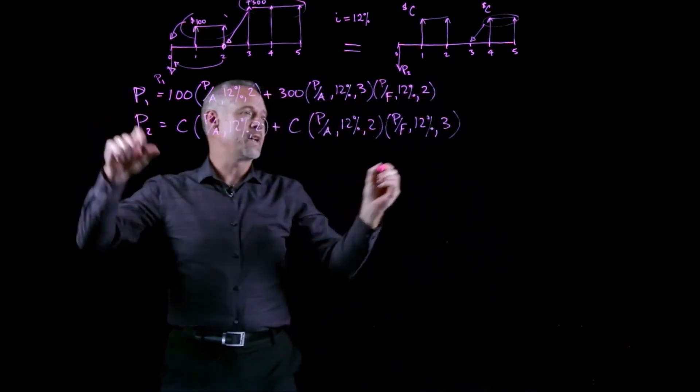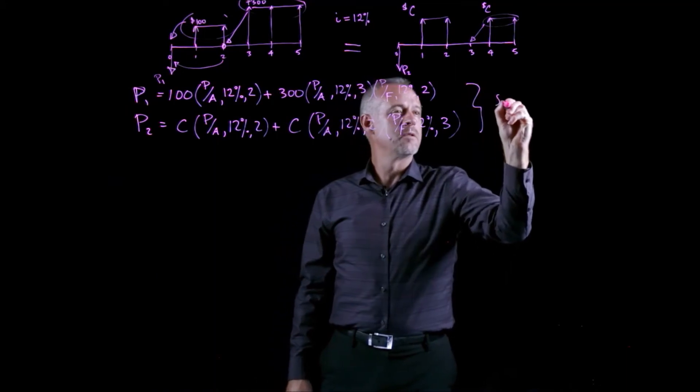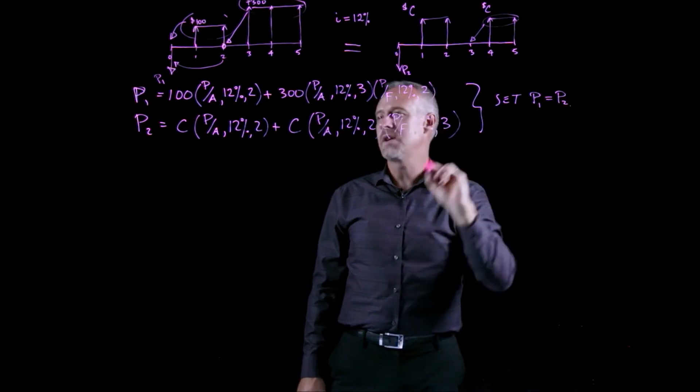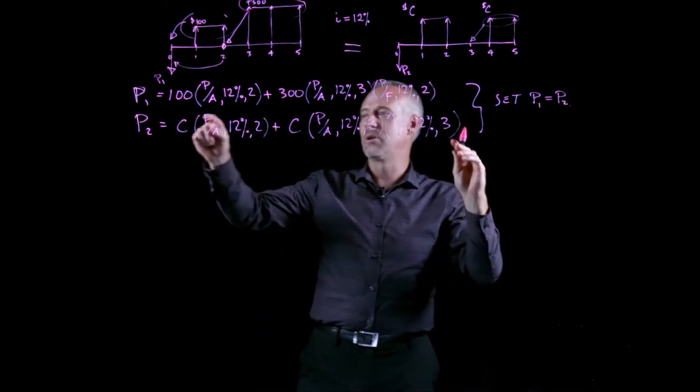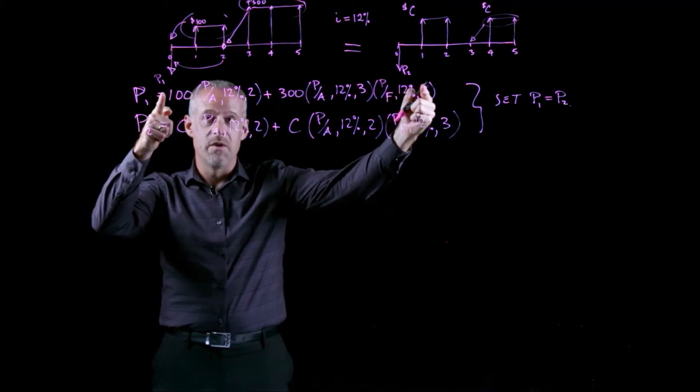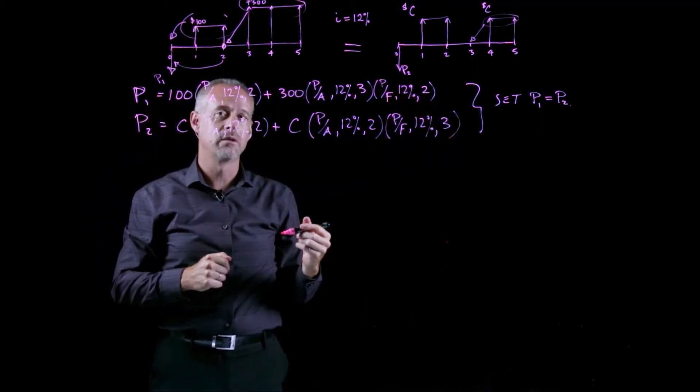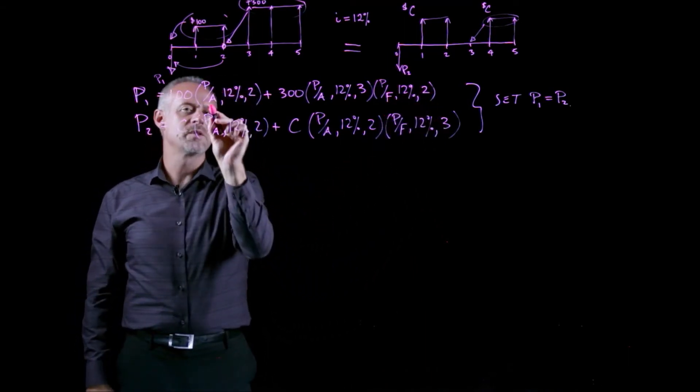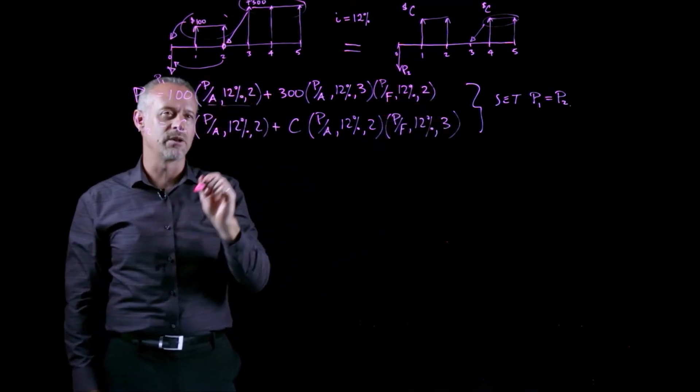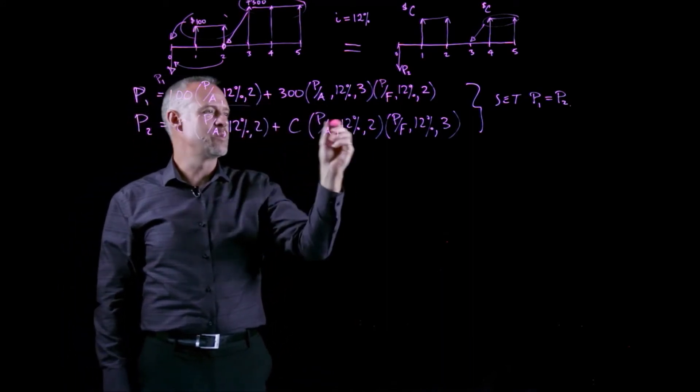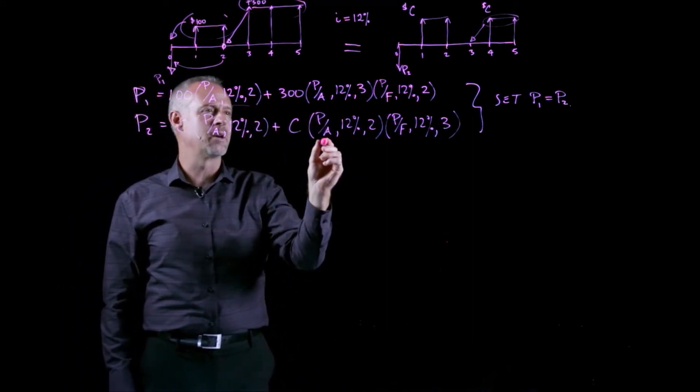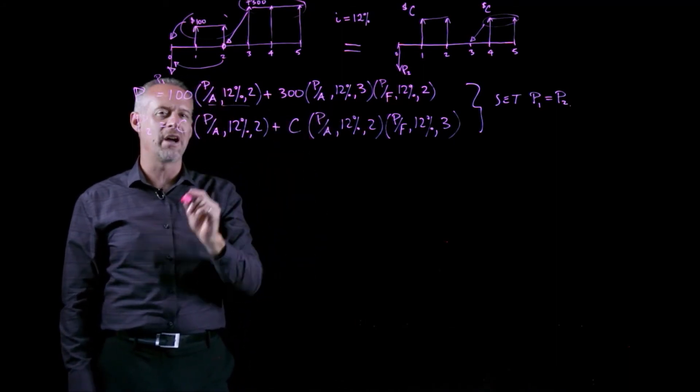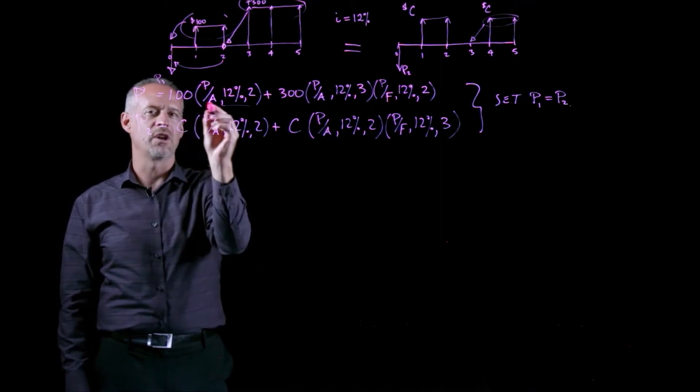So now I can then set P1 equal to P2. If I set P1 equal to P2, I would end up with a big long expression where I'd have this amount being equal to this amount. If you look at these two expressions, this compound interest factor, the P given A, 12% and 2 seems to occur in a bunch of places, occurs in three of the terms, so it might be advantageous to divide through by that, which is what I'll do.